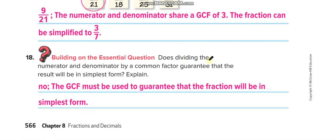Does dividing the numerator and denominator by a common factor guarantee that the result will be in simplest form? No, not by a common factor, by the greatest common factor. The greatest common factor must be used to guarantee that the fraction will be in simplest form.